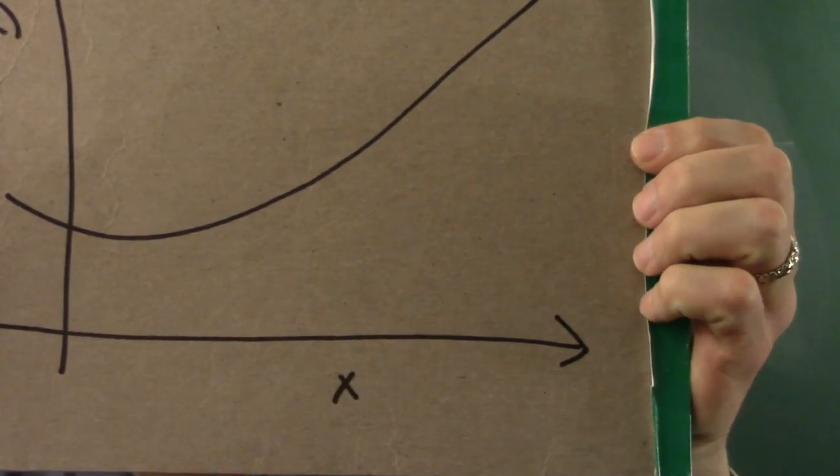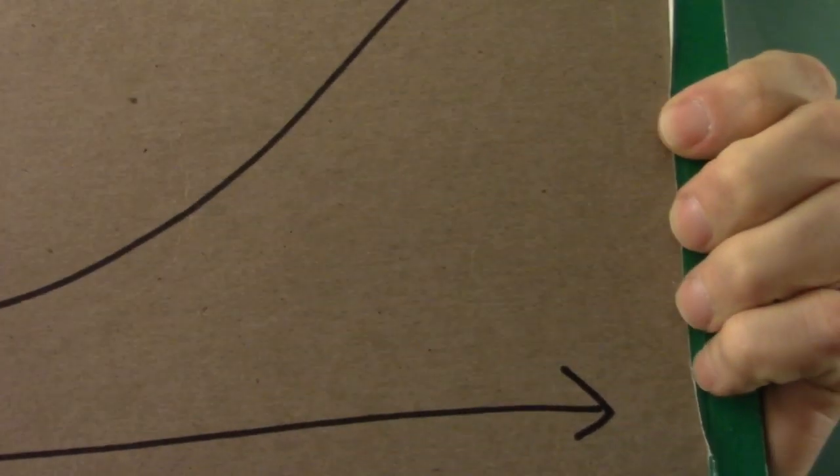And now, imagine zooming in. So, I'm moving the function closer and closer to the camera. And you should see that the curve starts to look more and more like a straight line.